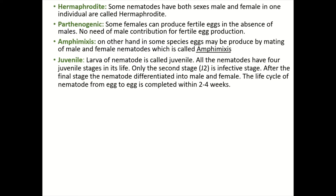In hermaphrodites, some nematodes have both male and female sexes in one individual; for example, Heterodera and Globodera species are hermaphroditic. In parthenogenesis, some females can produce fertile eggs in the absence of males, so there is no need for male contribution for fertilization. In amphimixis, eggs are produced by mating of male and female nematodes.